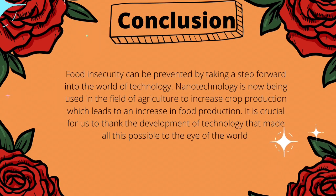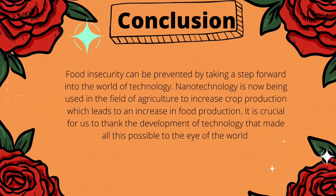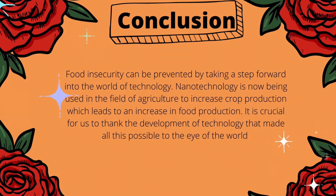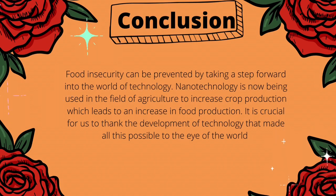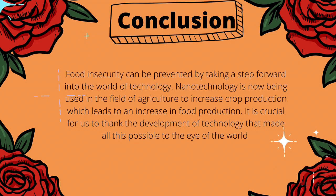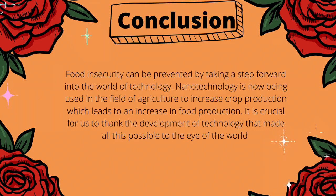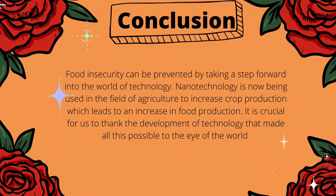As a summary, food insecurity can be prevented by taking a step forward into the world of technology. Nanotechnology is now being used in the field of agriculture to increase crop production, which leads to an increase in food production. It is crucial for us to appreciate the development of technology that made all this possible.